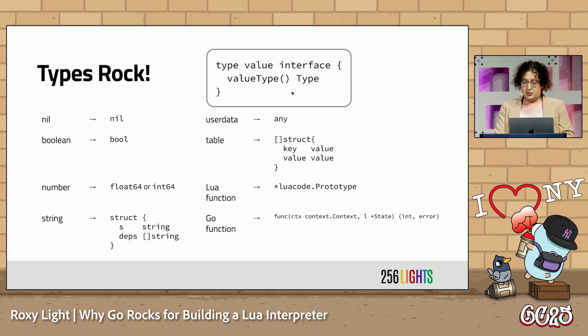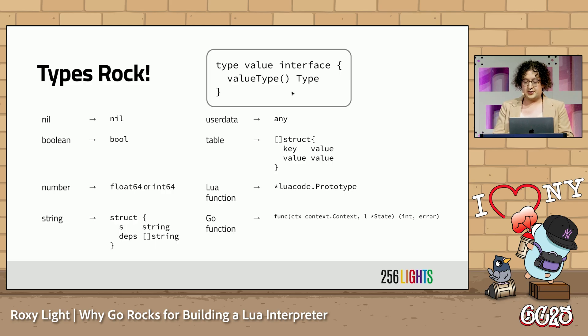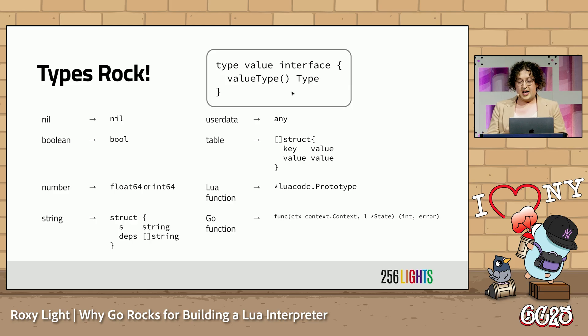In the PUC-Rio Lua implementation, a value is a complex C union with a lot of branching and preprocessor macros. What rocks is that in Go, I can use an interface type and have methods like string conversion on each value type.